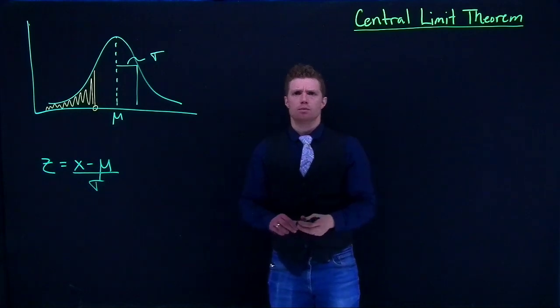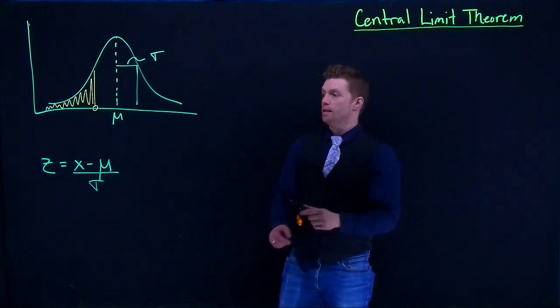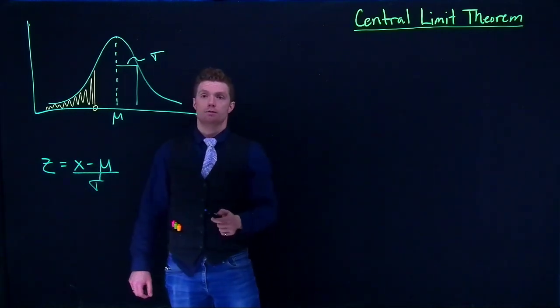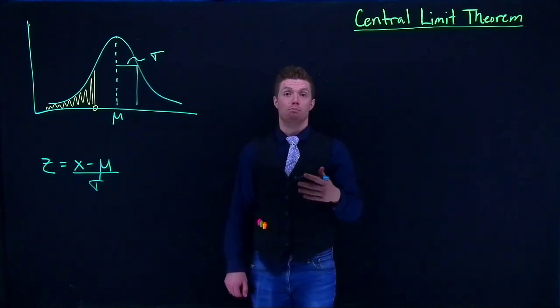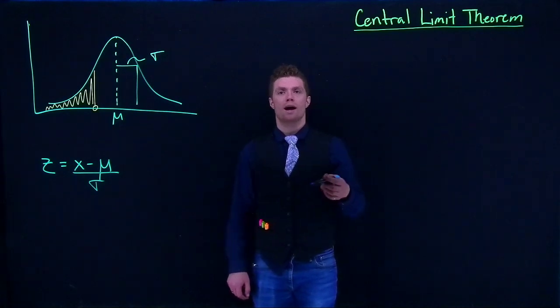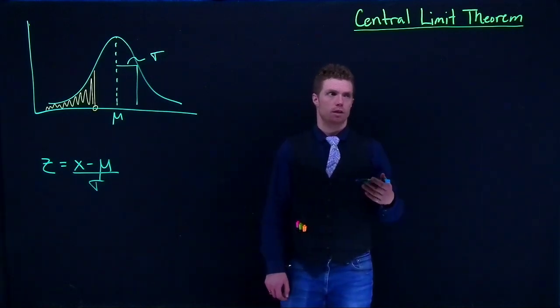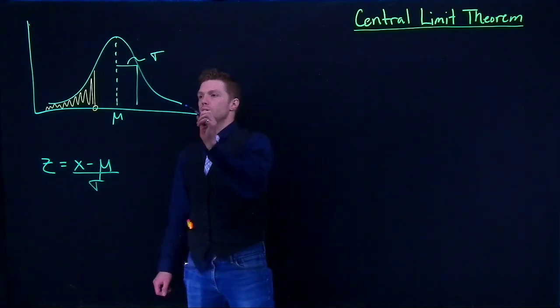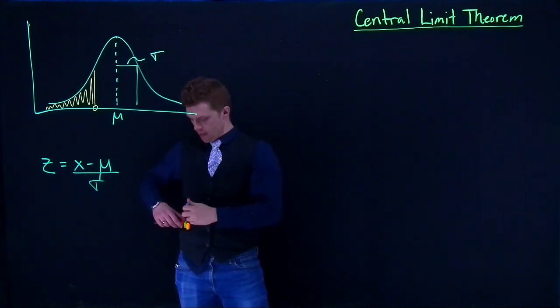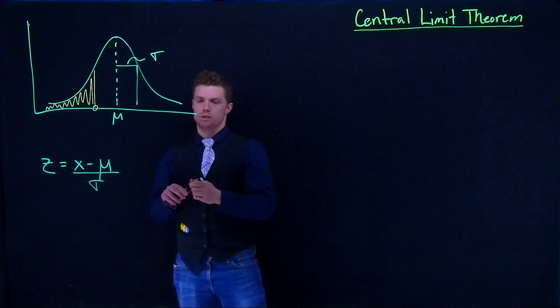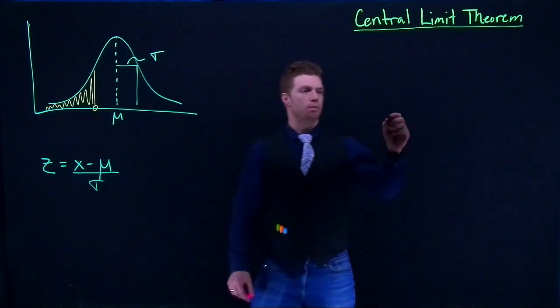But sometimes we're not interested in just a single observation. Instead, oftentimes we are interested in looking about how x bar is distributed or how the sample mean is distributed. So what happens when we're dealing with the central limit theorem and we are dealing with a sampling distribution.